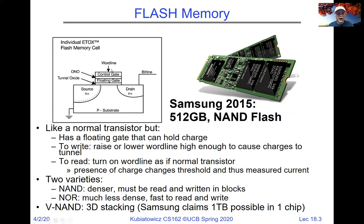The erase process is basically raising the word line far enough that electrons are pulled off the floating gate. That's called a floating gate. There are two varieties of flash memory: NAND, which is much denser, and NOR, which is faster but not really used much these days. There's even 3D stacking of these, so many modern flash chips have many layers of transistors on top of each other. The basic idea is trapping electrons on the floating gate to distinguish between a 1 and a 0.